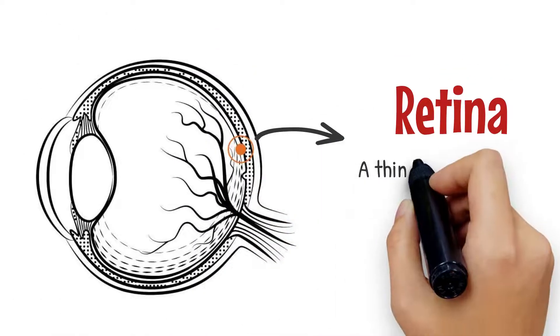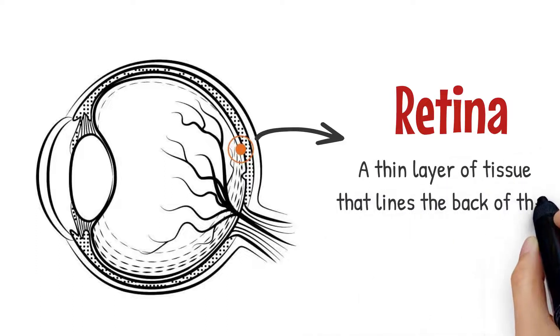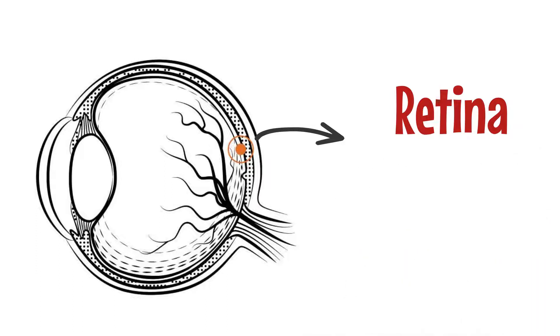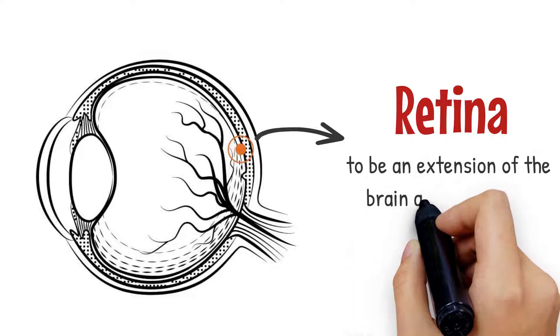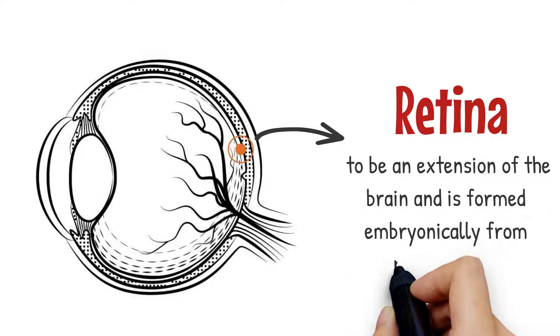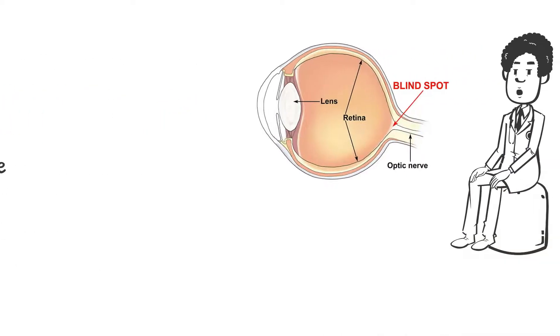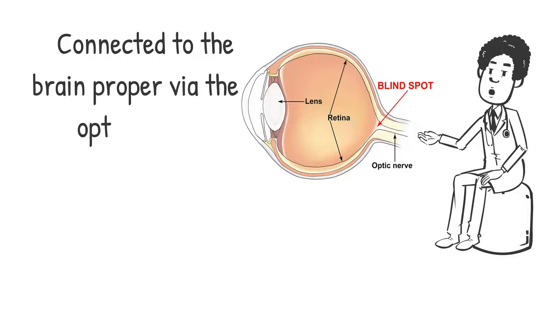The retina is a thin layer of tissue that lines the back of the insides of our eyeballs. It is actually considered to be an extension of the brain and is formed embryonically from neural tissue. It is connected to the brain proper via the optic nerve.